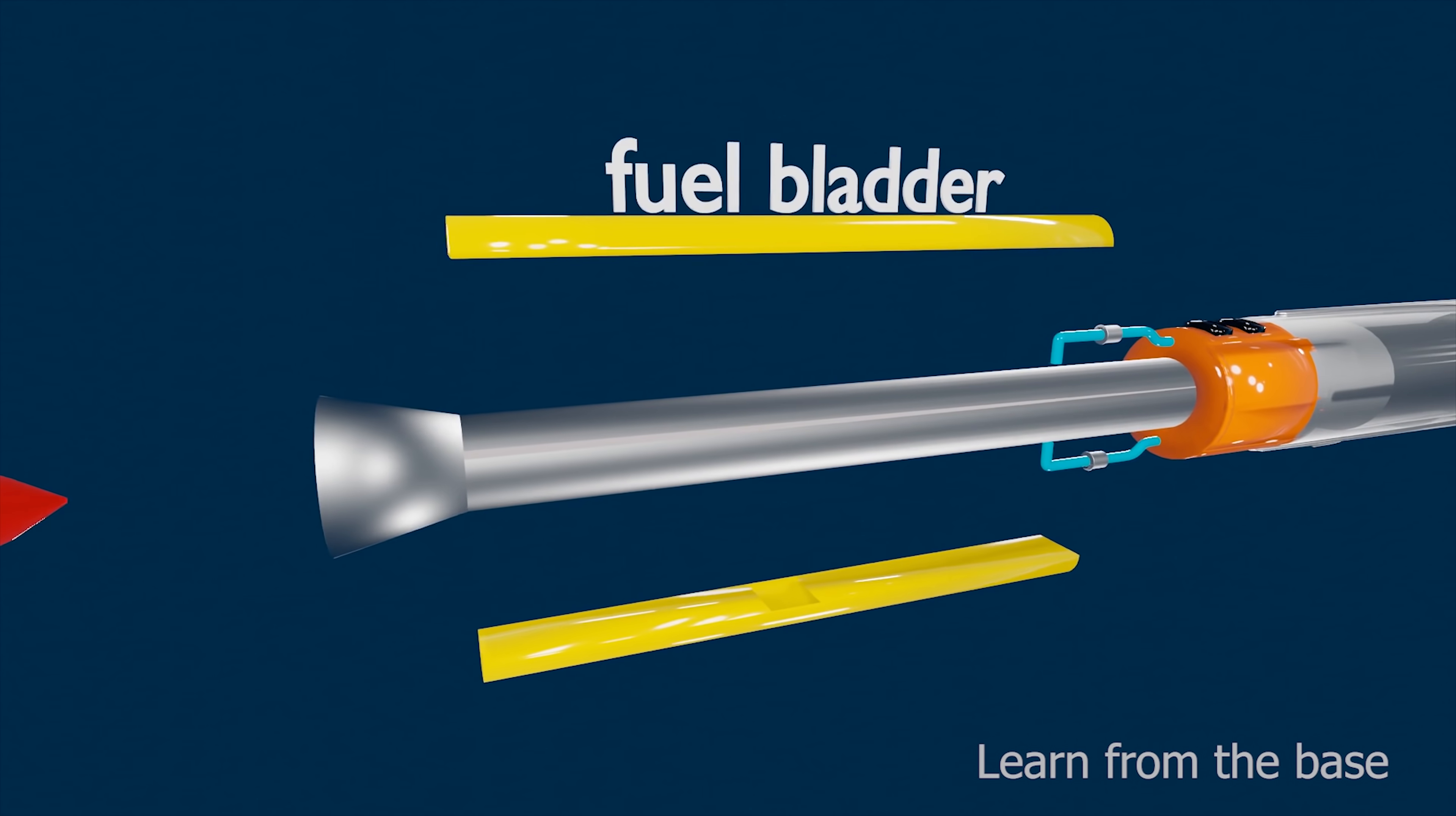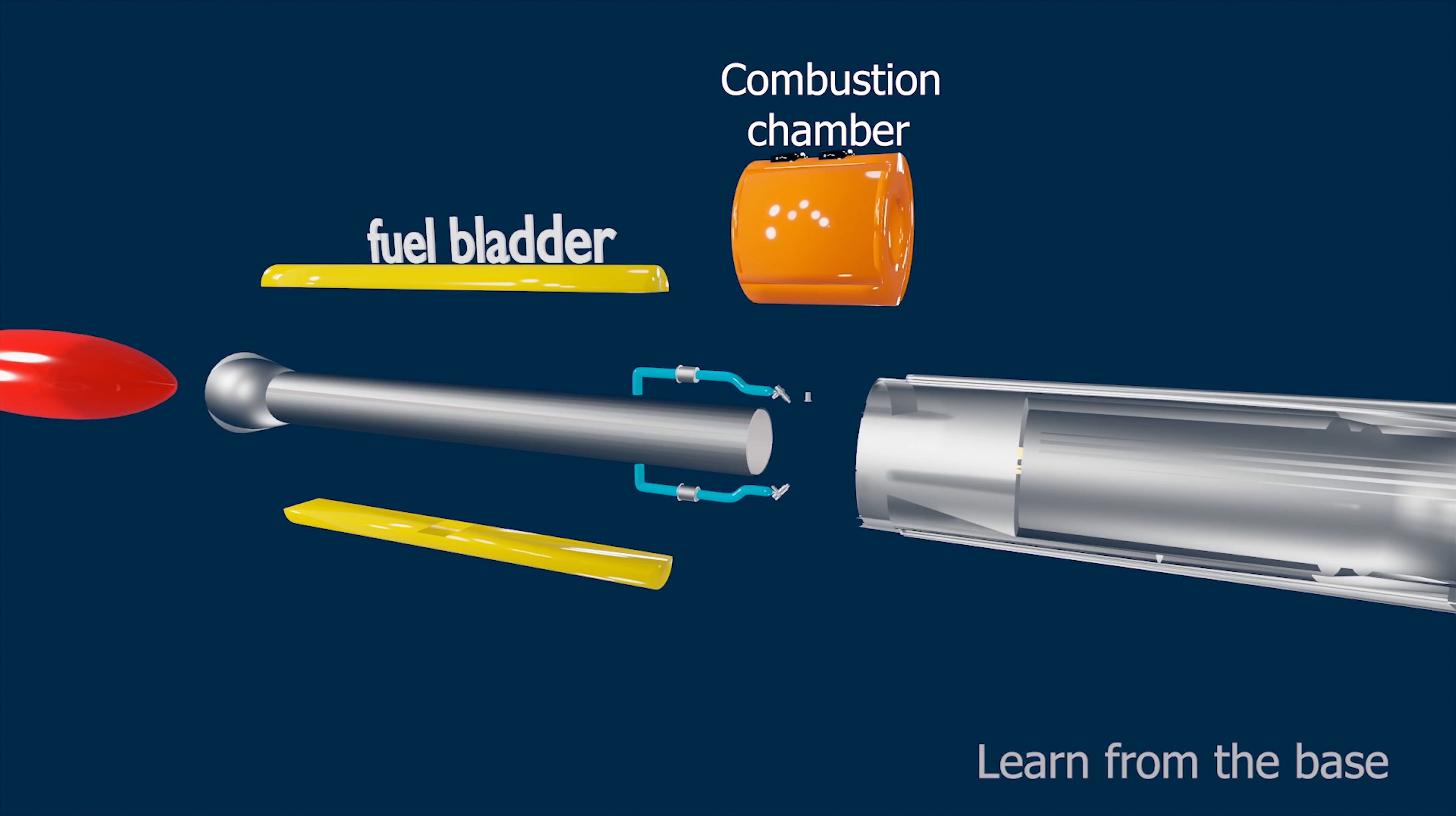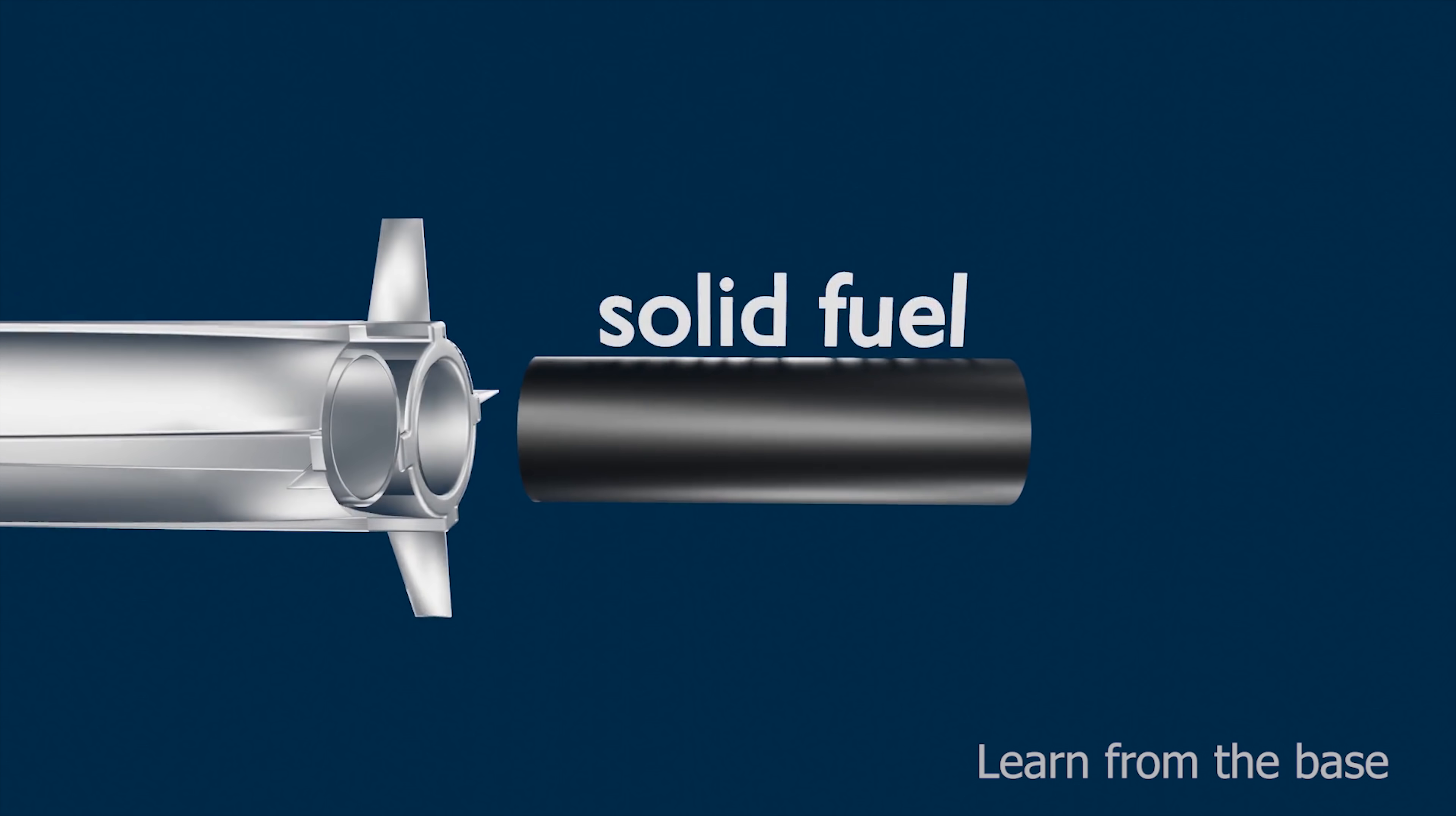These are the fuel bladders. The liquid fuel is stored in these bladders. These are the combustion chambers. The air-fuel mixture burns inside the combustion chamber. These are the solid propellants.